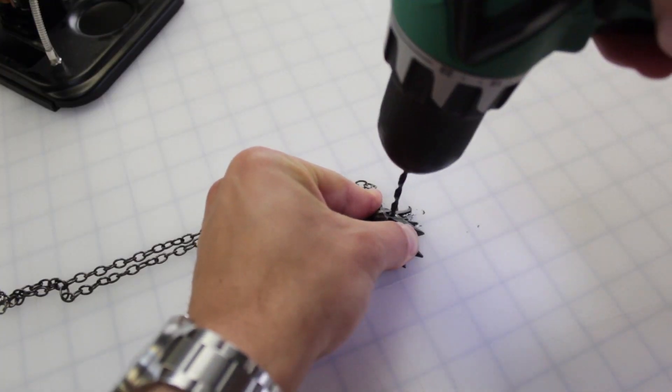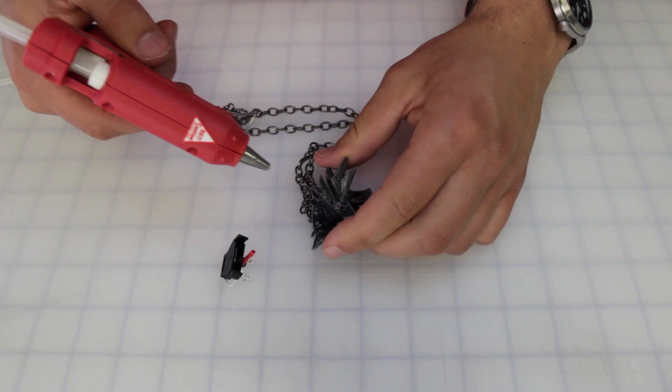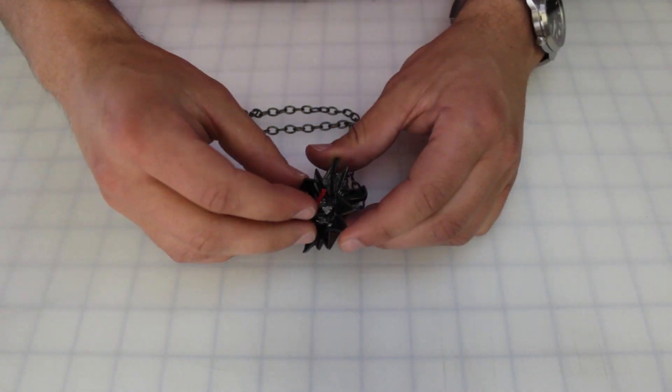With the electronics finished, drill out the eyes to make room for the LEDs. Break out the hot glue gun and use it to secure everything in place.